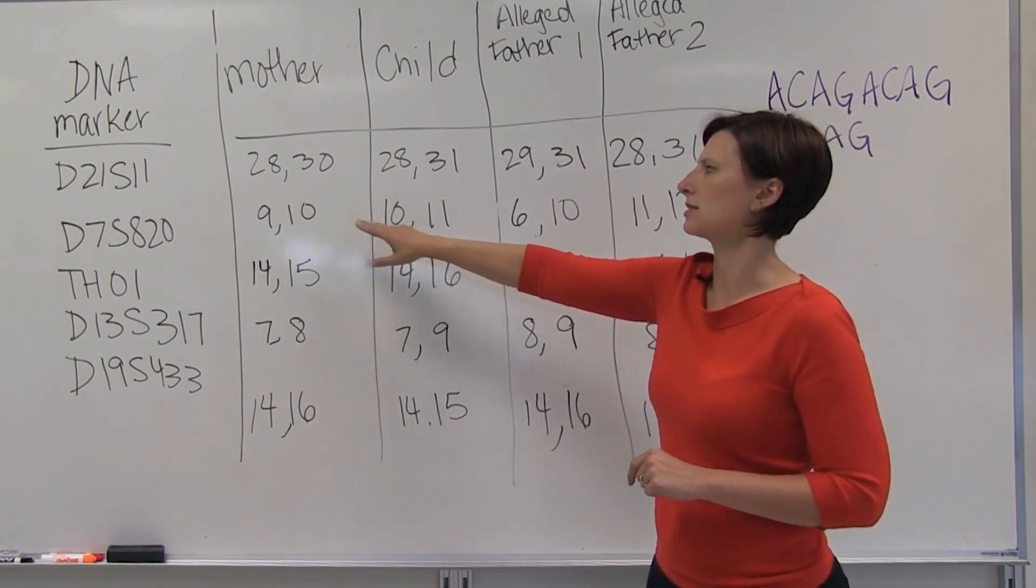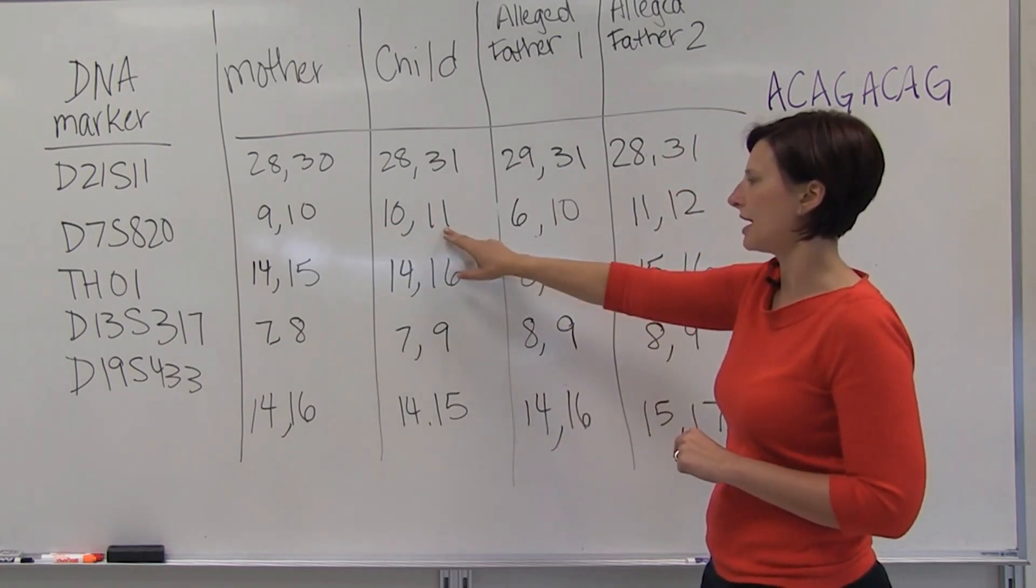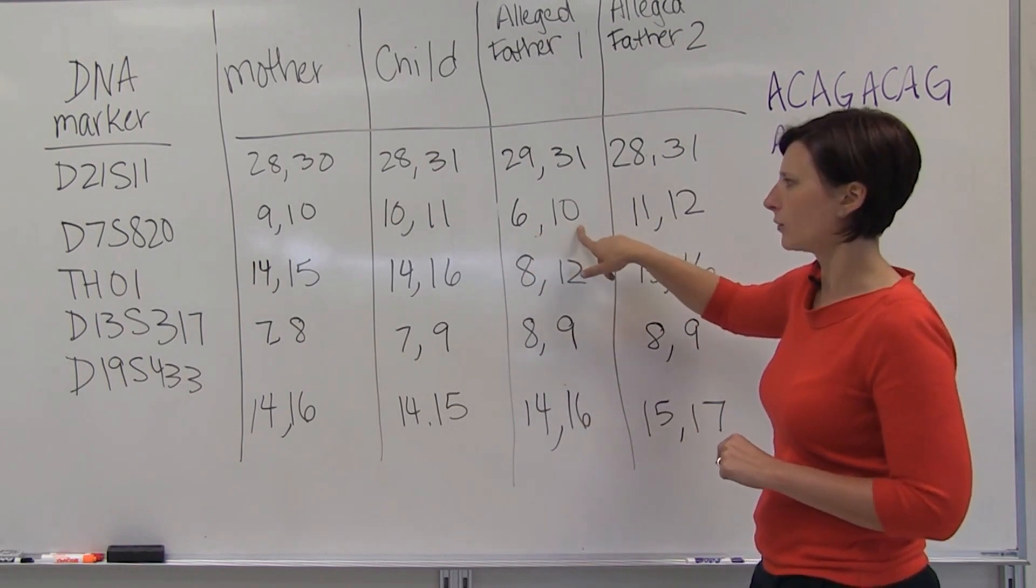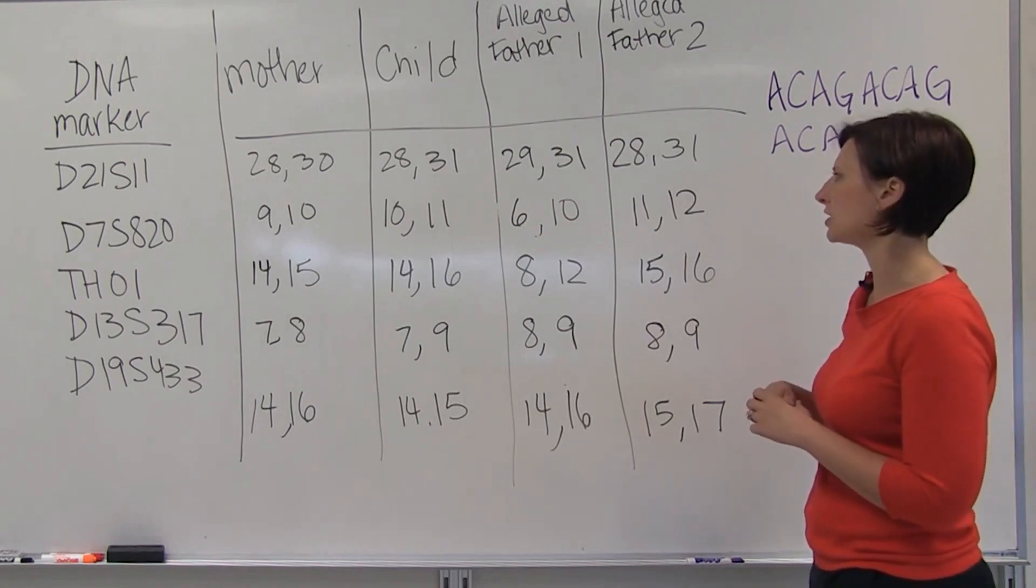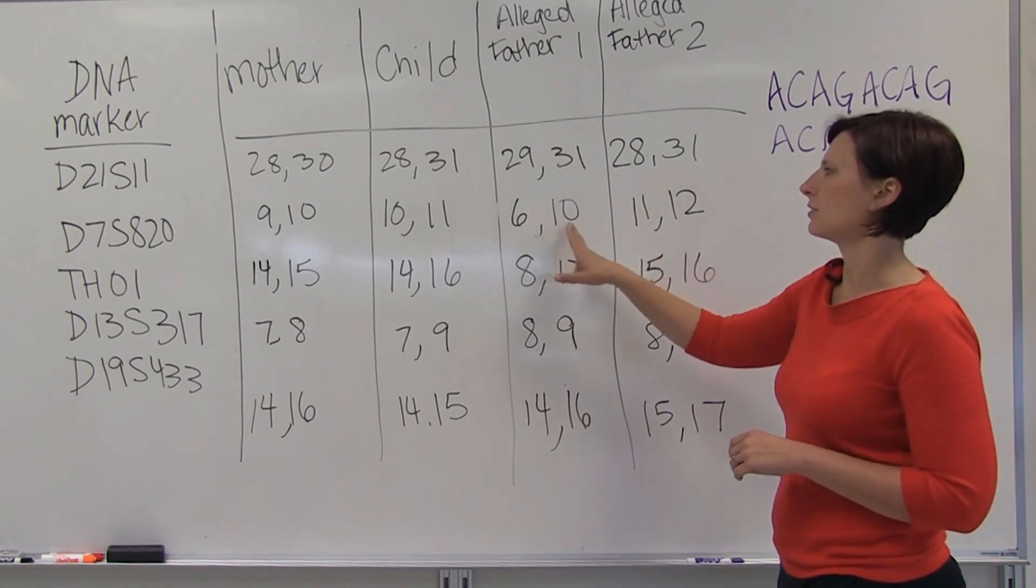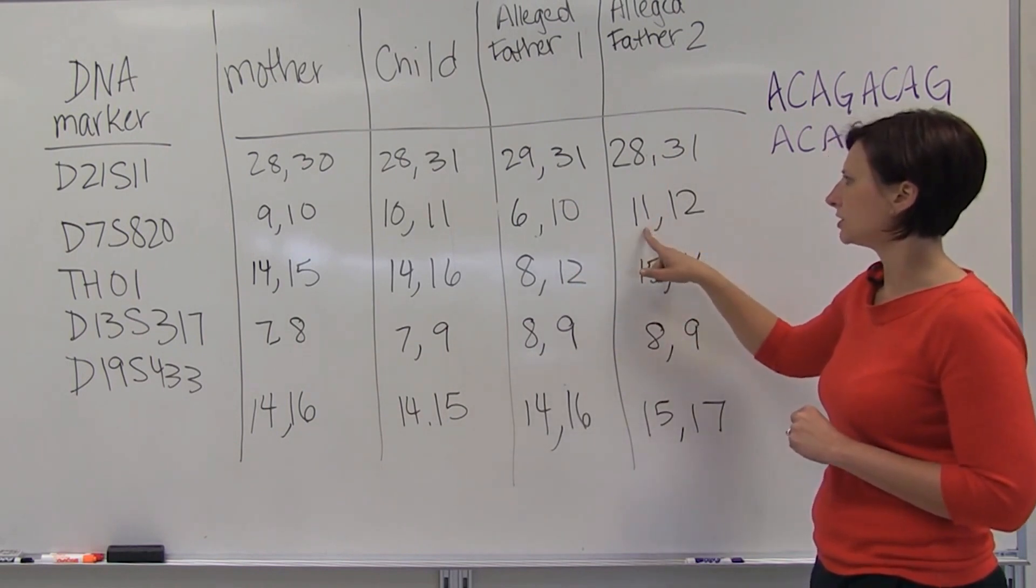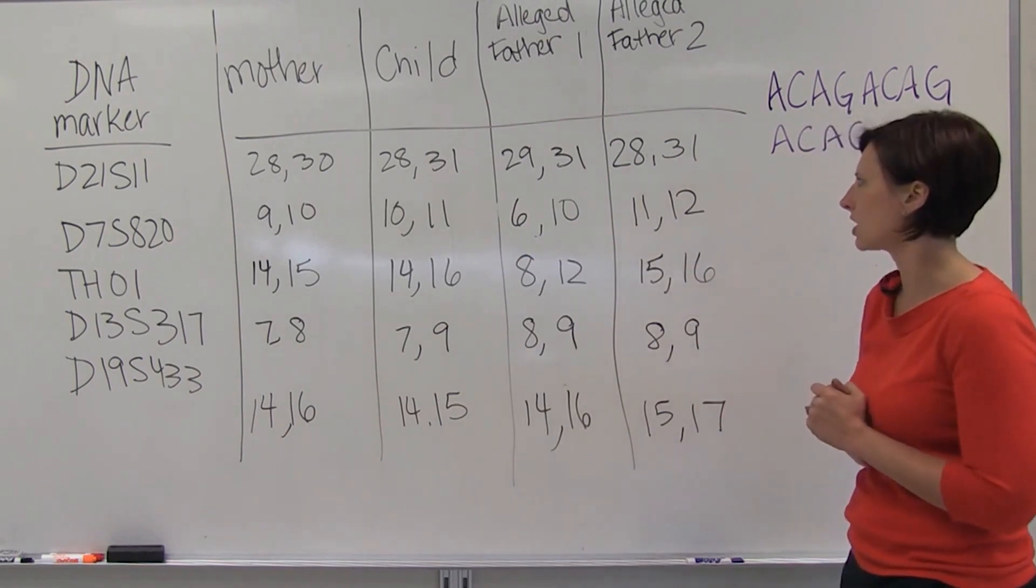That had to have come from the mother because it's the only one of the mother's alleles that the child has. So at this locus, alleged father 1 couldn't have contributed any of the child's genetic material, so we know at this locus we can rule out alleged father 1. Alleged father 2 could have contributed its 11 allele to the child.